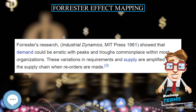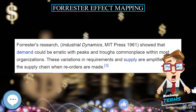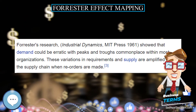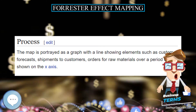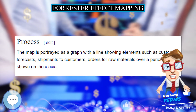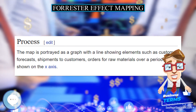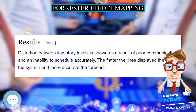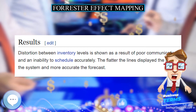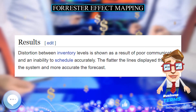Process. The map is portrayed as a graph with a line showing elements such as customer forecasts, shipments to customers, and orders for all materials over a period of time shown on the x-axis.